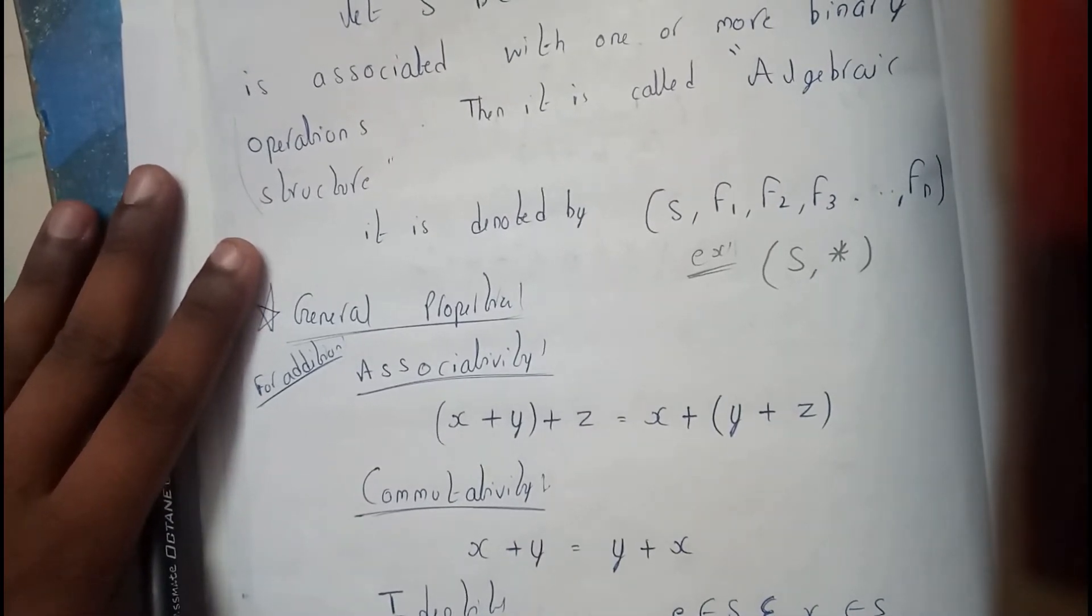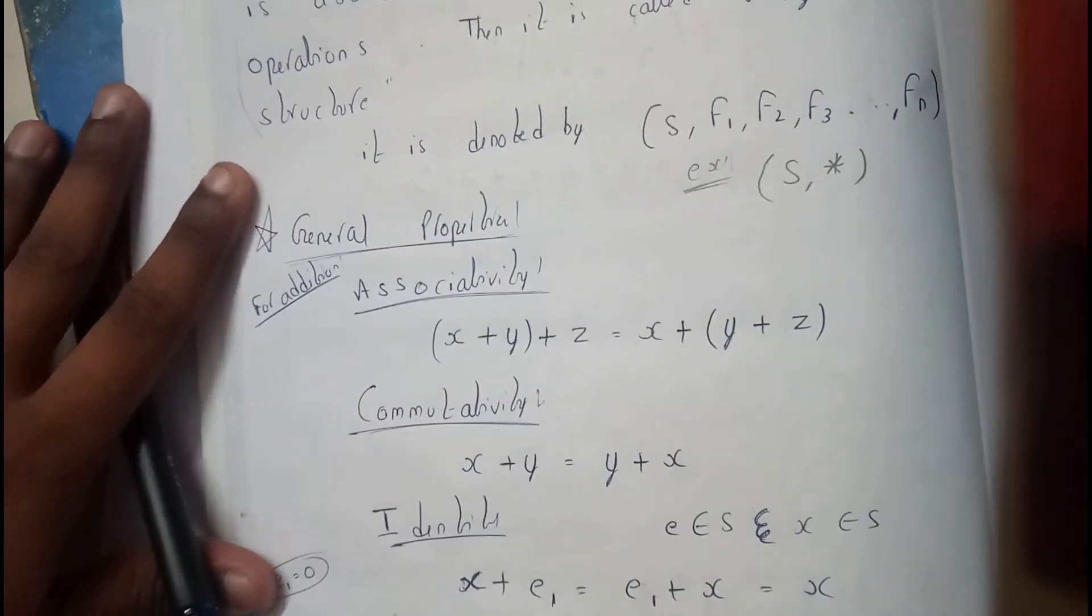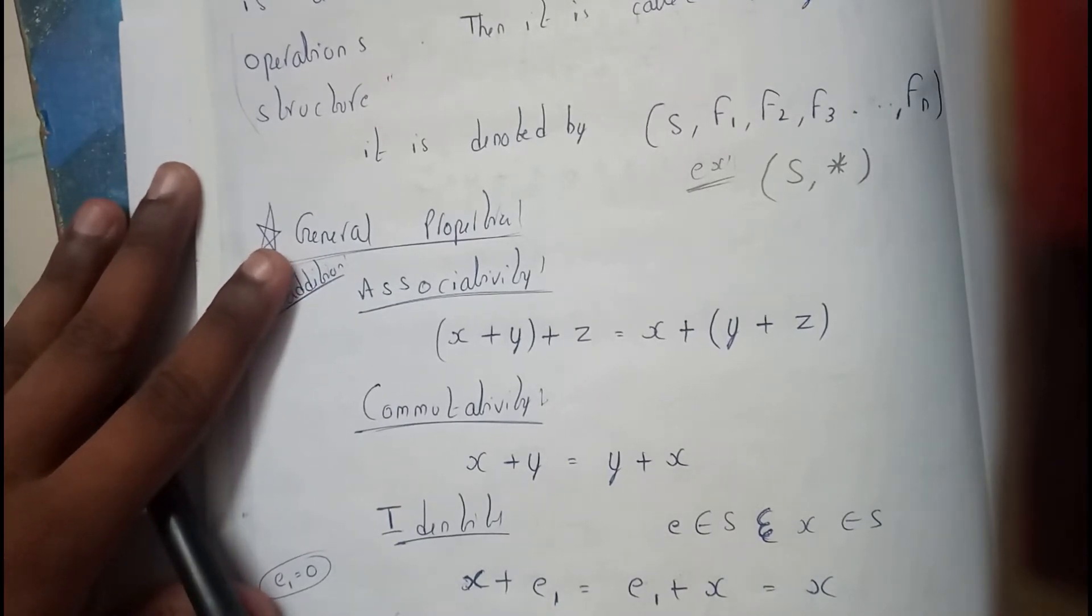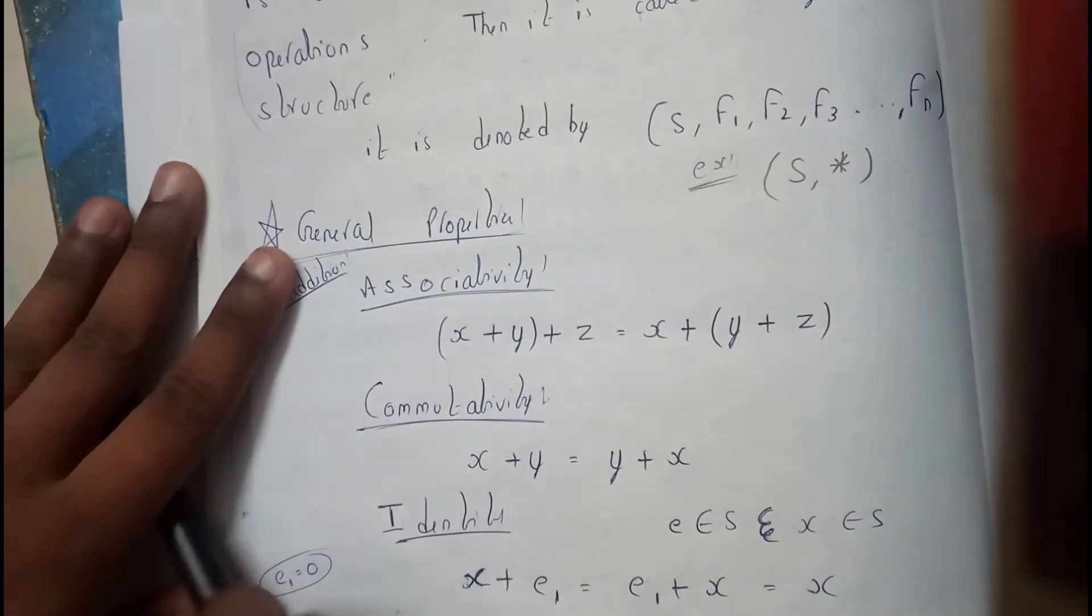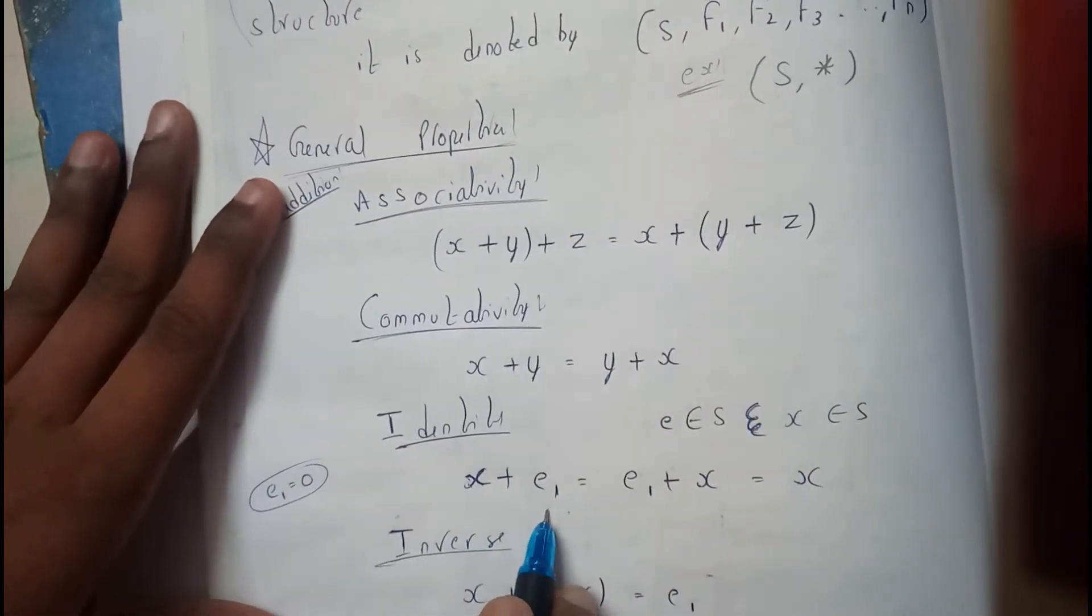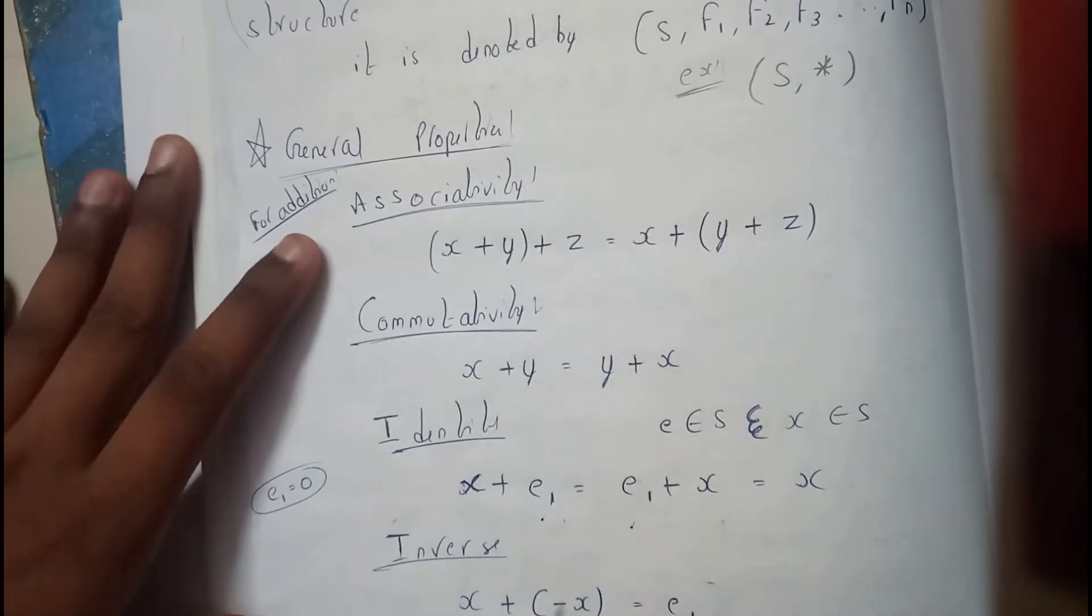Commutative means x + y equals y + x. That's simple. Next, identity: x + e equals e + x equals x, where e is a constant.